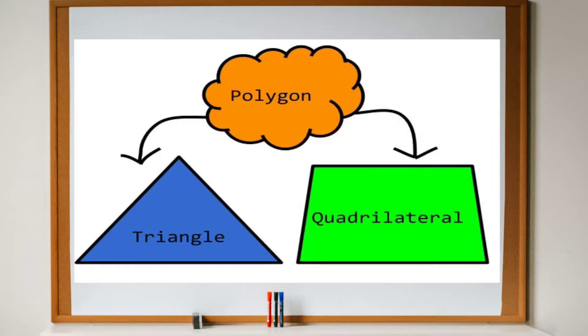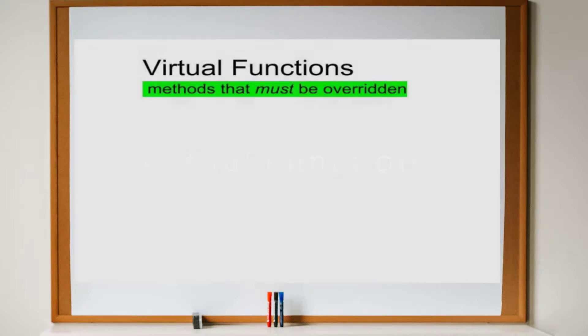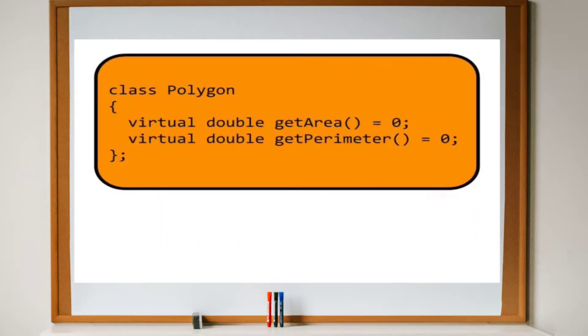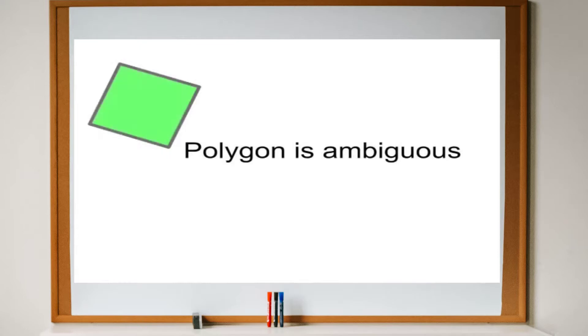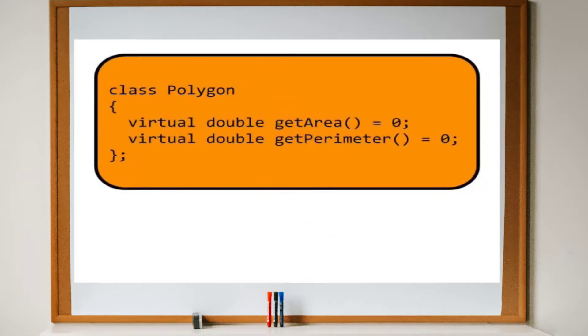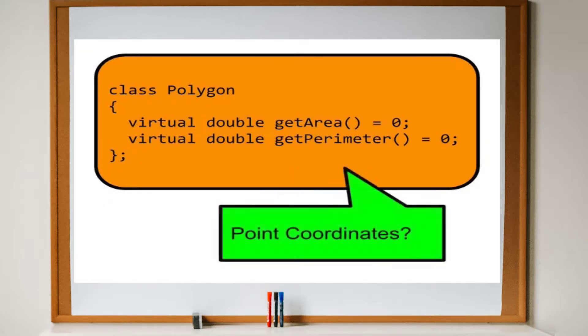In C++, an abstract class has at least one virtual function. A virtual function is a method in a base class that must be overridden by its derived classes. We declare the virtual function with the keyword virtual and set the function to equal zero. Let's give the polygon class two virtual functions, getArea and getPerimeter. Note that we cannot determine the area or perimeter of a generic polygon since we don't know anything about its specific dimensions.